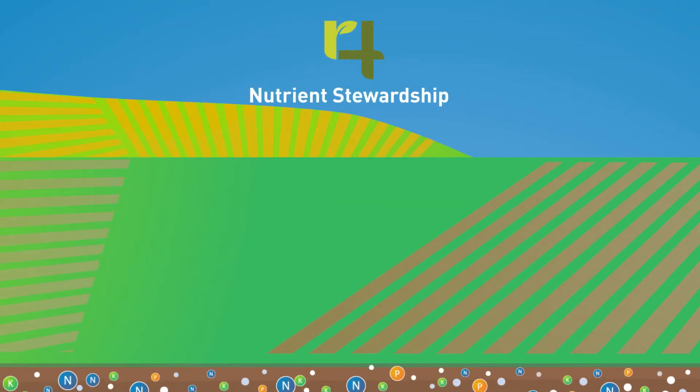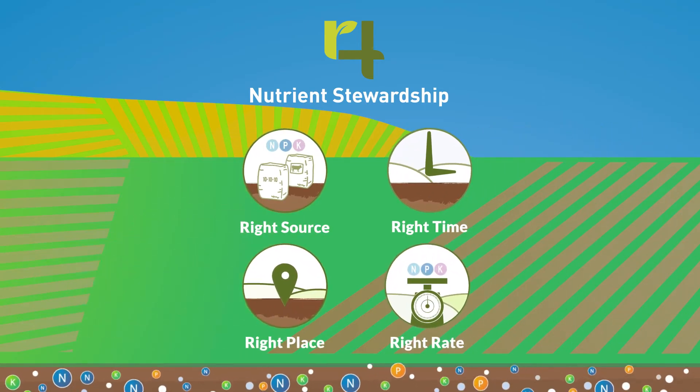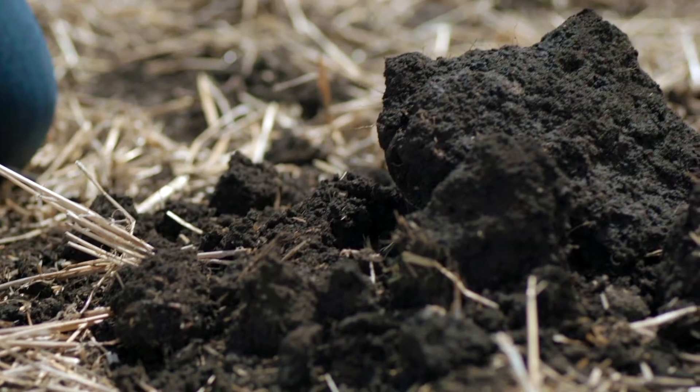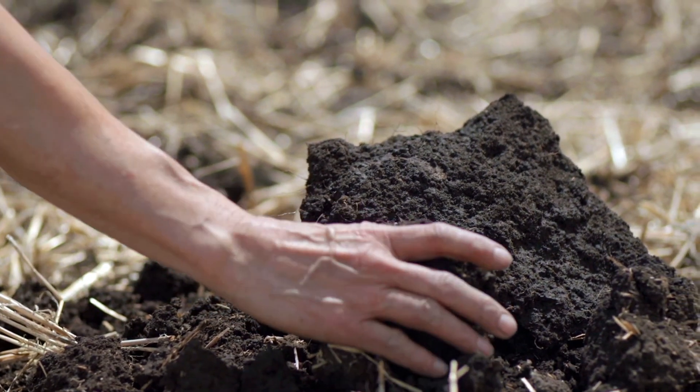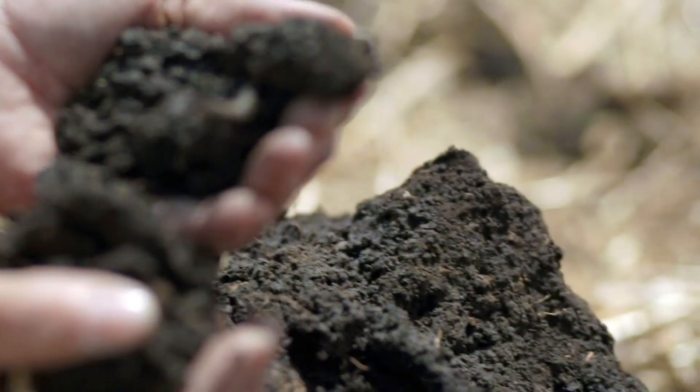To maximize sustainability, farmers use best management practices such as the 4R nutrient stewardship system. First, farmers test the soil to find out what nutrients soil needs, and then they select the seeds that will grow best in the area.